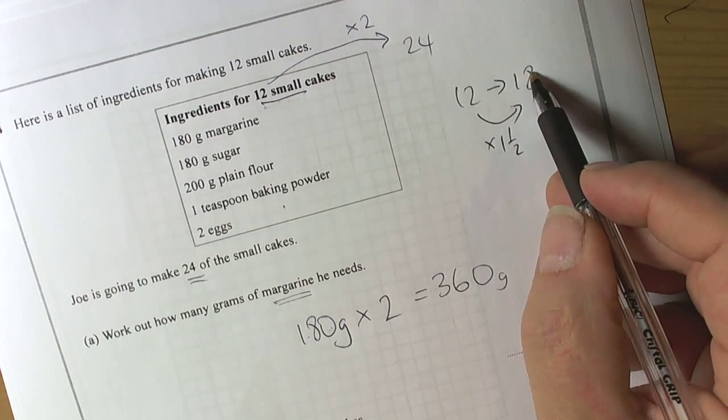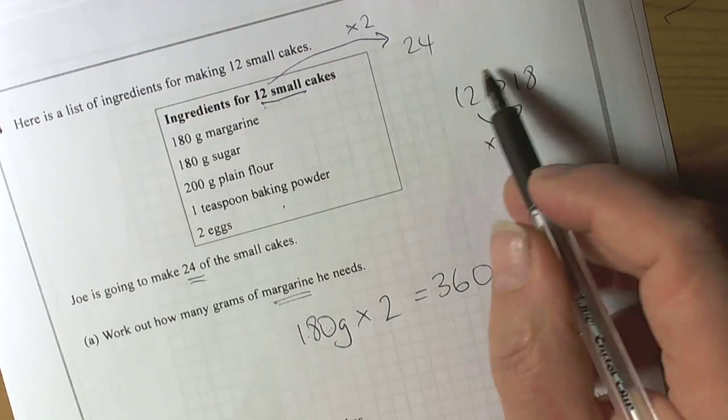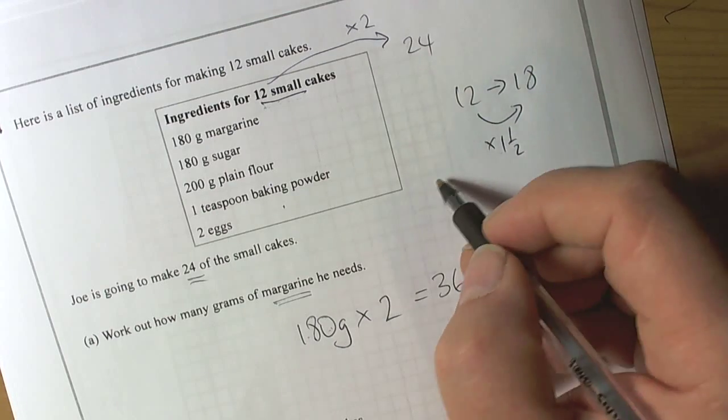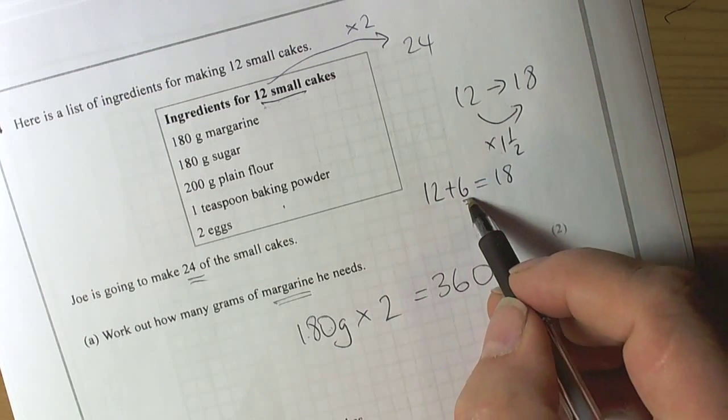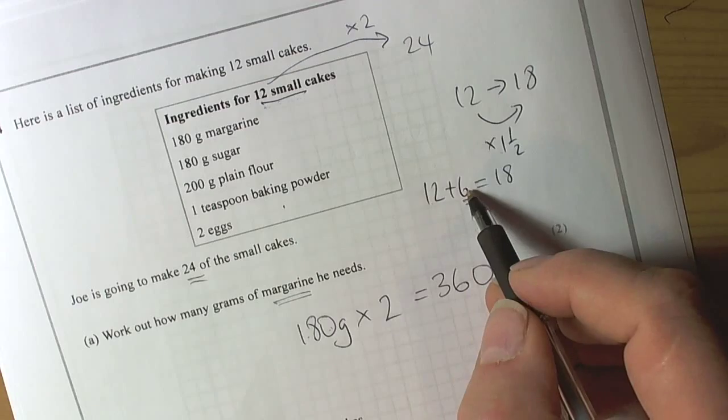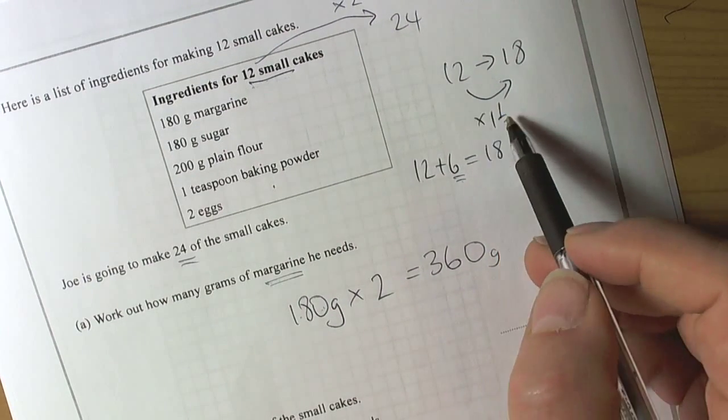Half of 12 is 6. Add it on makes 18. So it times by one and a half. That is one way of doing it. Or we could recognize that 12 plus 6 is equal to 18 and therefore we need half the recipe added on. Either way we are going to be multiplying by one and a half.